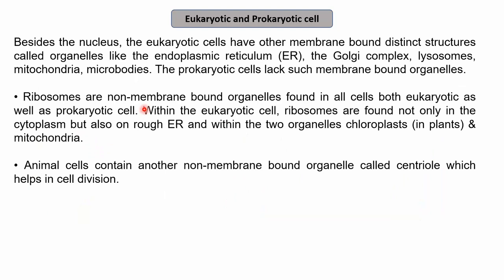Besides the nucleus, eukaryotic cells have other membrane-bound distinct structures such as the endoplasmic reticulum, Golgi complex, lysosomes, mitochondria, and microbodies. Prokaryotic cells lack such membrane-bound organelles — in prokaryotes, there are no membrane-bound organelles present, while eukaryotes have many: nucleus, Golgi complex, endoplasmic reticulum, lysosomes, mitochondria, and microbodies.